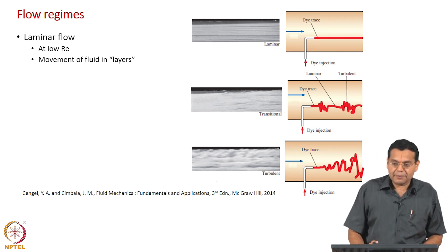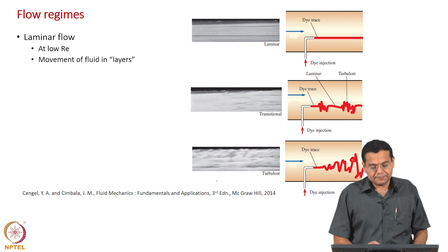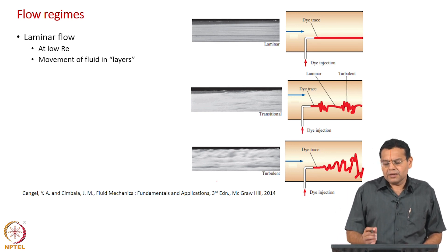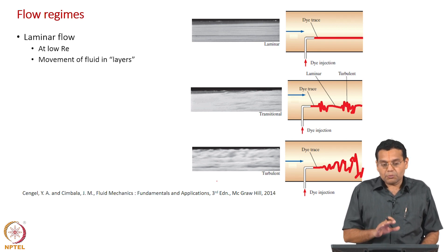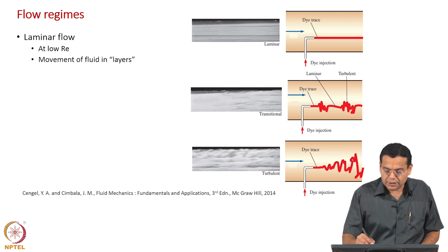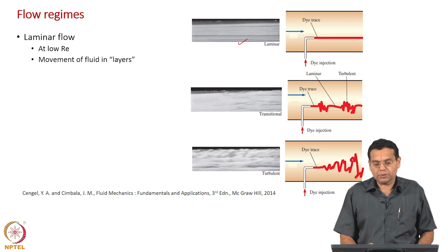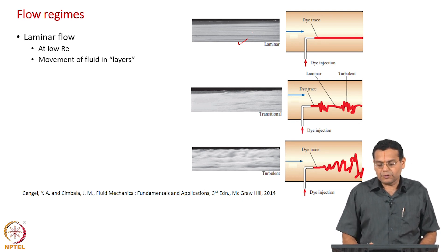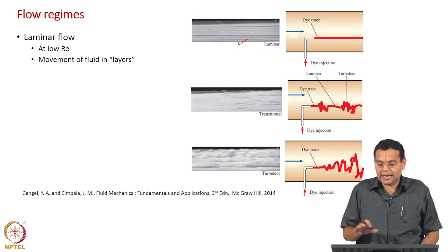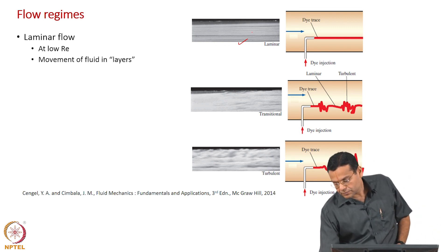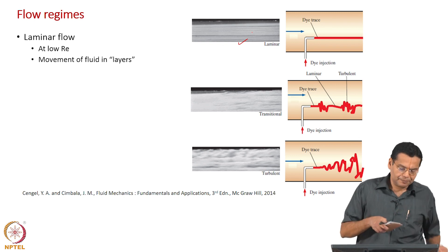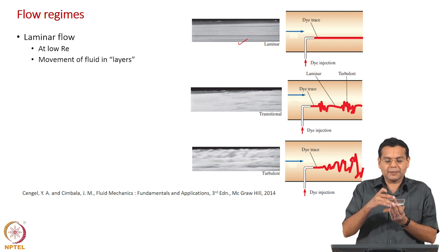That is why we term this flow laminar. A photograph of a laminar flow is shown where you can easily observe the fluid flowing layer by layer — whether it is flow between two parallel plates or flow in a pipe, flow happens layer by layer.